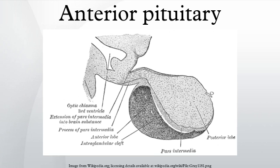Earlier studies have shown a localization of melatonin receptors in this region. Pars intermedia sits between the pars distalis and the posterior pituitary, forming the boundary between the anterior and posterior pituitaries. It is very small and indistinct in humans.